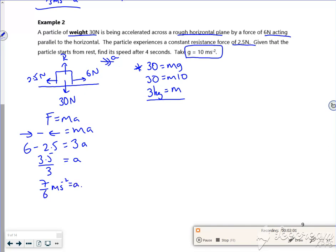Right then, so let's use SUVAT then. So I want to find the speed, don't I? I'm given no information about the distance.